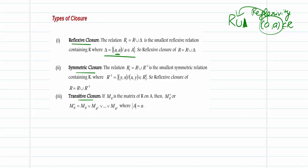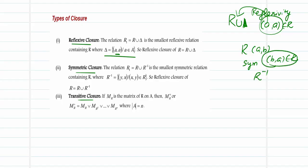For symmetric closure, the relation R1 is obtained by taking the union of R with R inverse. Why R inverse? Because if (a, b) belongs to R, symmetricity requires (b, a) also to belong to the relation. This (b, a) is obtained via R inverse — the collection of all (b, a) whenever (a, b) belongs to the relation. So if R lacks its inverse elements, we top it up with R inverse, forming R1 = R ∪ R inverse. This new relation is called the symmetric closure.